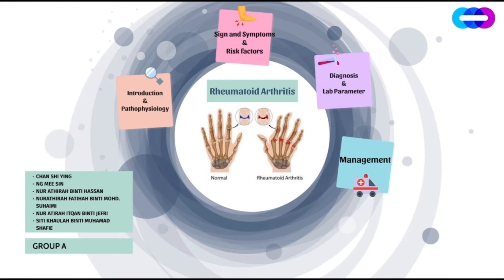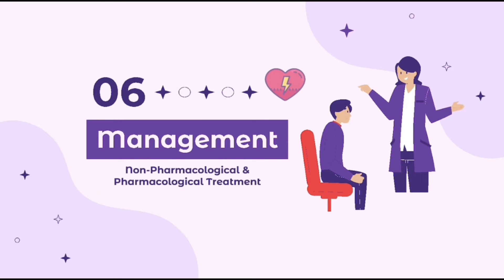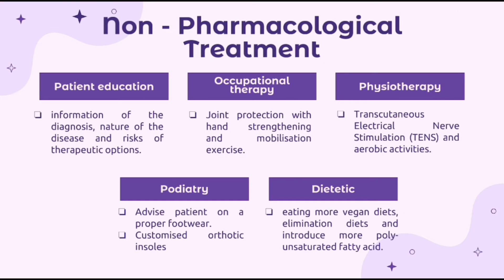How can we manage rheumatoid arthritis? There are two types of management: non-pharmacological and pharmacological treatment. In non-pharmacological treatment, patient education is very important and should include information on the diagnosis, nature of the disease, and risks of therapeutic options. Occupational therapy, physiotherapy, and podiatry are effective in reducing morning stiffness, pain, and functional capacity. Occupational therapy includes joint protection with hand strengthening and mobilization exercises, while physiotherapy includes transcutaneous electrical nerve stimulation and aerobic activities. For podiatry, patients are advised on proper footwear and recommended to wear customized orthotic insoles.